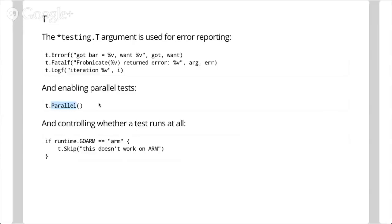There's also a function called Skip. If you have a test case that doesn't work on a particular platform or under certain conditions, you can call t.Skip. It bails from the test without failing it, but logs a message to the console saying the test was skipped — for example, because it doesn't work on ARM. This is common if you have a Unix-y library and want to stub out some tests on Windows.